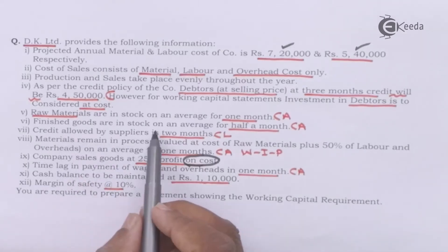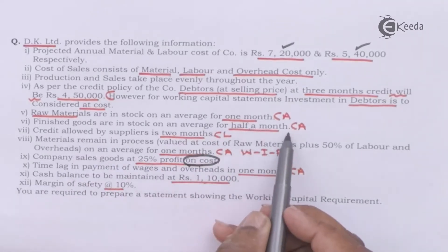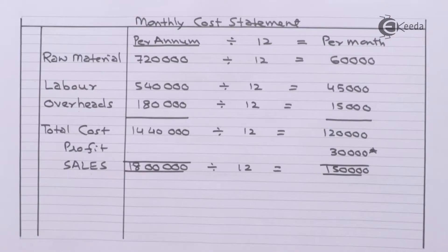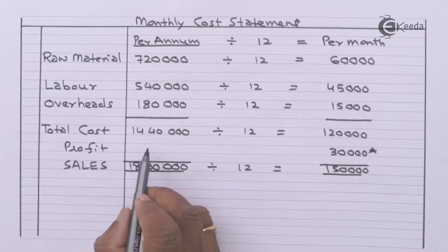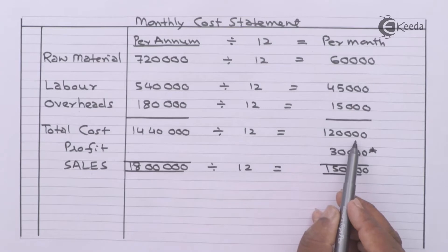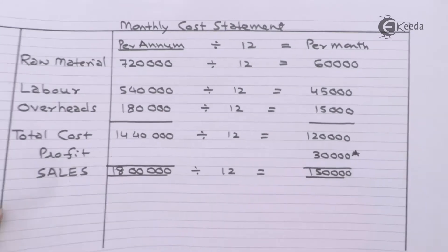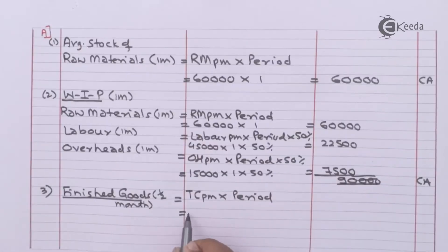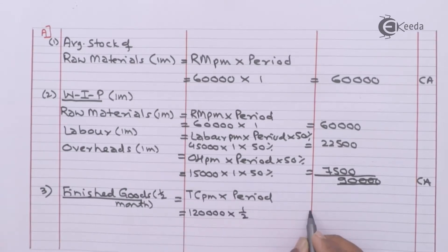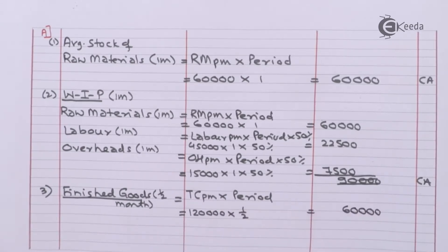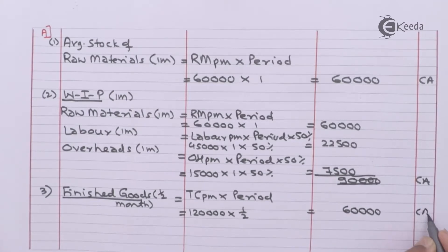Finished goods are in stock on an average for half month. Total cost per month is one lakh twenty thousand; we are required to take half month. It is rupees sixty thousand — that will be part of current assets.